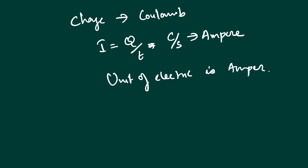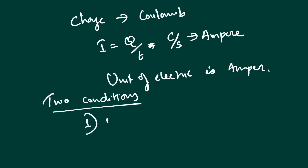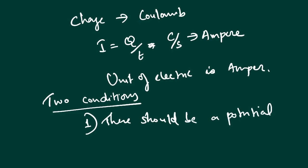For electric current to flow in a circuit, there are two conditions. First, there should be a potential difference. Second, there should be a conductor to allow the charge to flow.